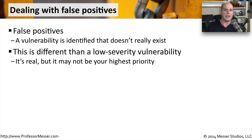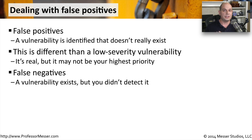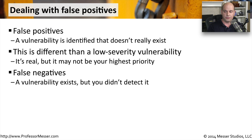The reverse is a false negative — that's when a device does have a vulnerability, but you ran your vulnerability scan and nothing was identified. This is almost worse than a false positive. With a false positive, you can look at the machine and determine the finding was incorrect. But a false negative means you'll never know the vulnerability is there, because you've scanned and gotten no results.